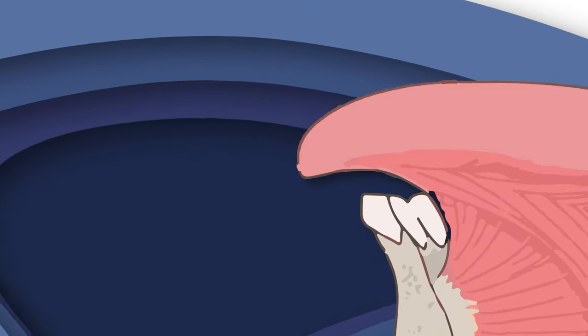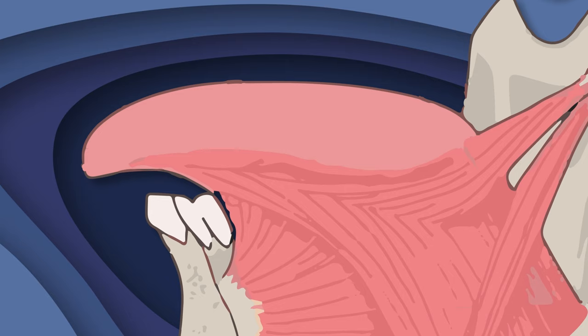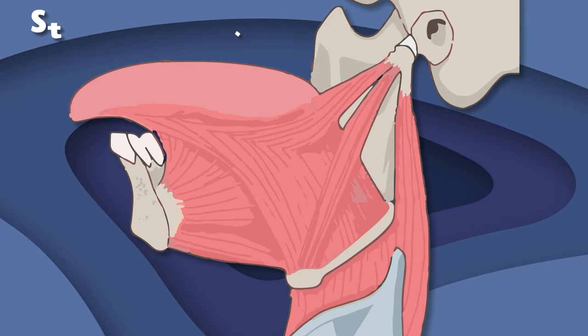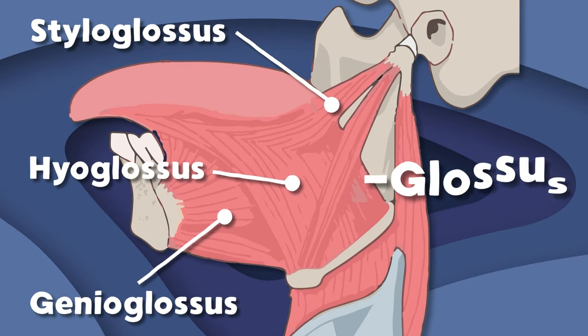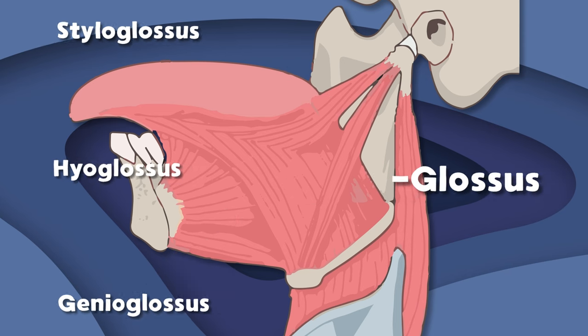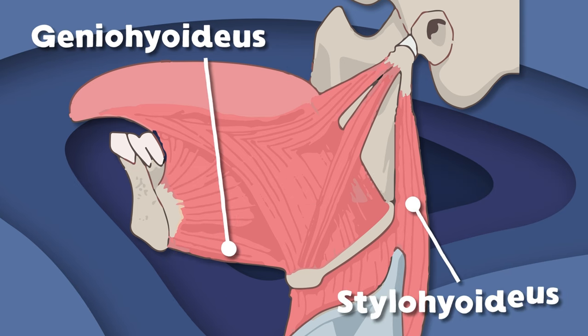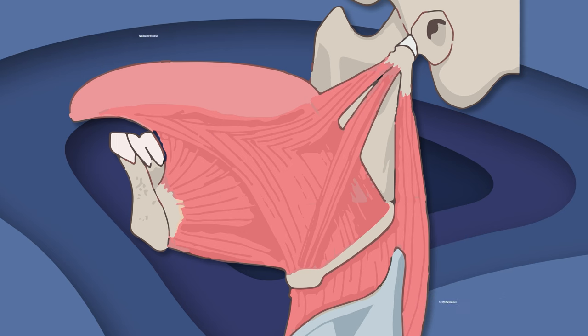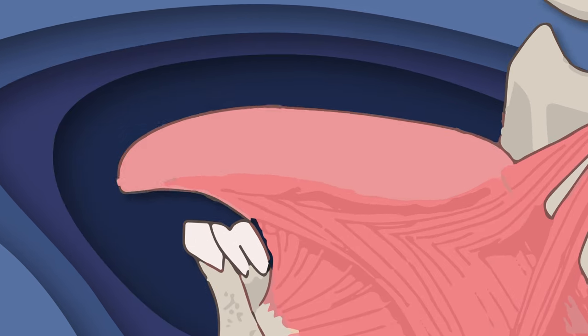The muscles in your tongue are a few we will discuss. The stylohyoid and genio all end in glossus. Then the geniohyoideus and stylohyoideus. Learning these muscles of your tongue, yeah it is a must.